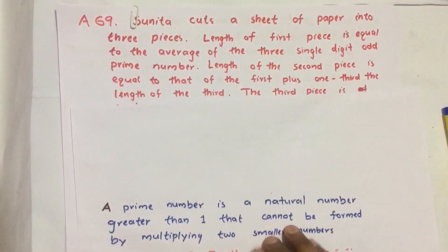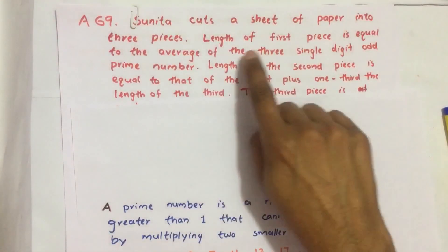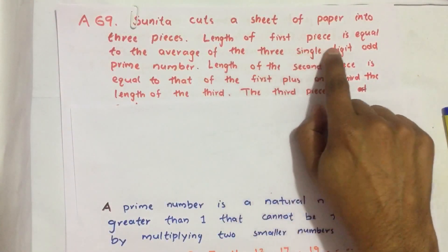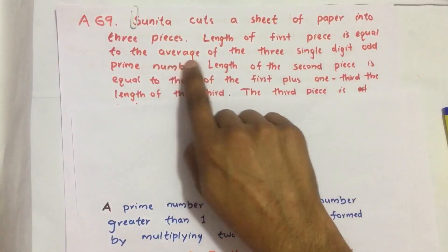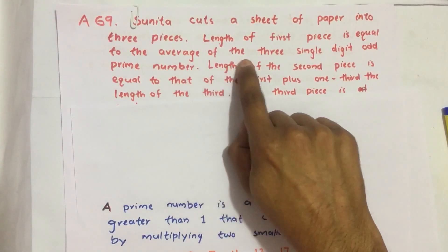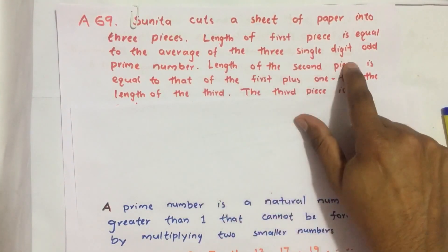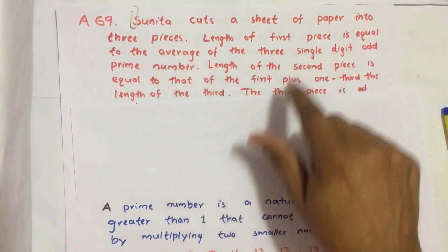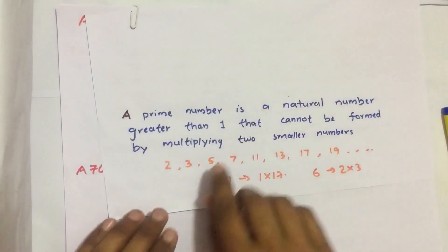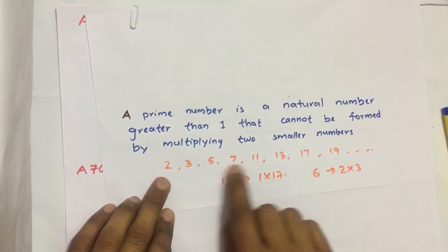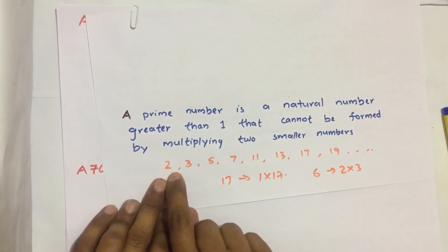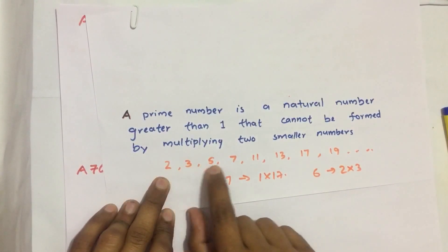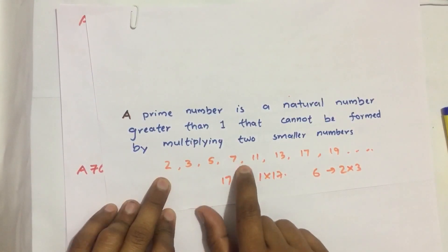The first statement says the length of the first piece is equal to the average of the three single digit odd prime numbers. The single digit prime numbers are 2, 3, 5, and 7.